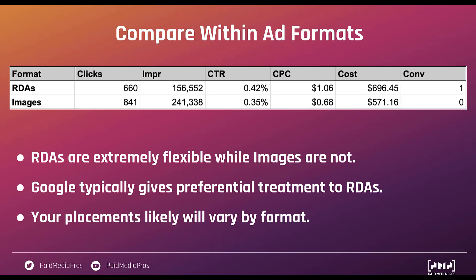The first is to compare within ad formats and not across ad formats. For this account, we're running two different types of ad formats: responsive display ads, which I'm calling RDAs, and then the banner or image ads, which I'll just call images. We're not using HTML5 in this account. Although we can run both of these ad formats in the same campaign, I don't compare these to each other when looking at performance. Responsive display ads are extremely flexible, and images are not. Google is able to put a responsive display ad in every different placement around the Google Display Network, and images only fit in their one specific spot, so the performance is almost always going to be quite a bit different.